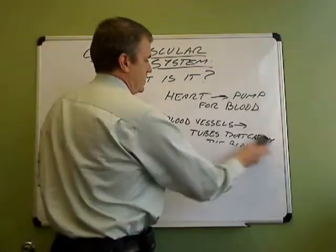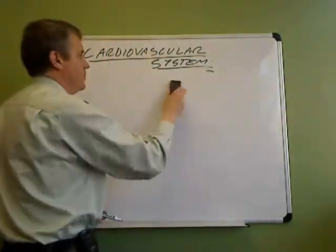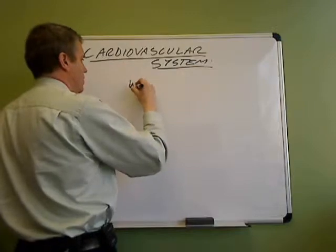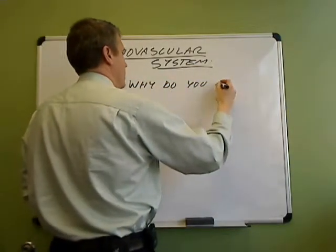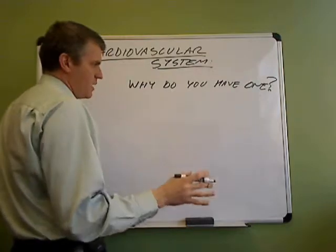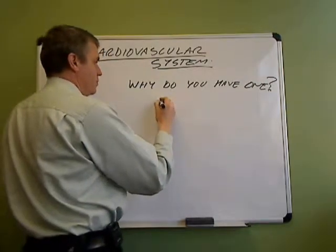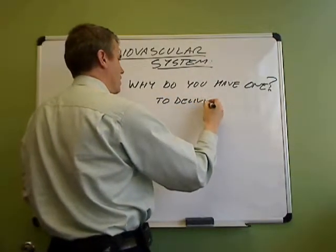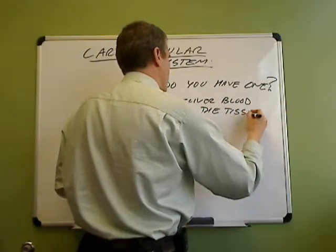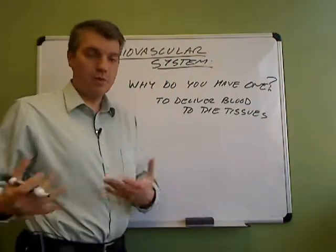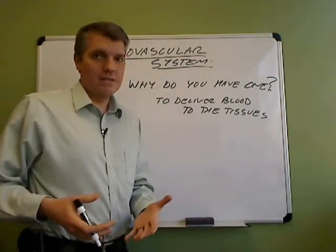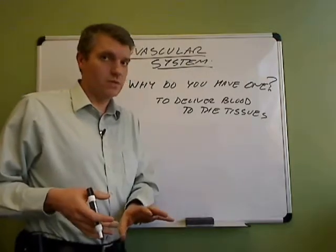Why do we have one? The answer is in order to deliver blood to the body's tissues. That blood carries nutrients with it, including oxygen — the respiratory gas — but also glucose, amino acids, fatty acids, and all kinds of nutrients that the tissues might need.